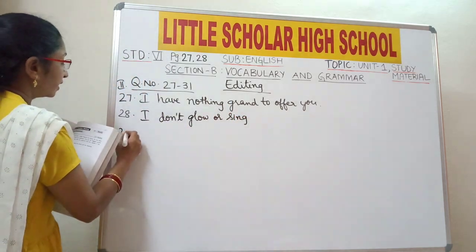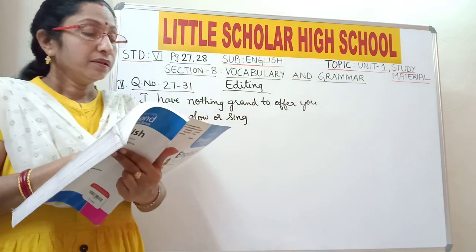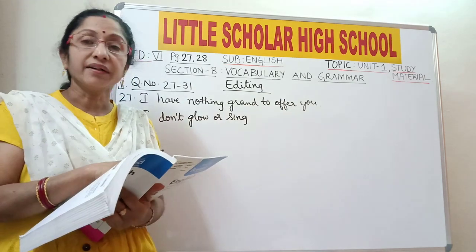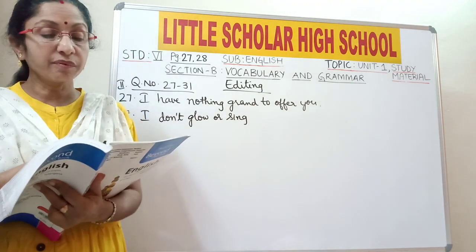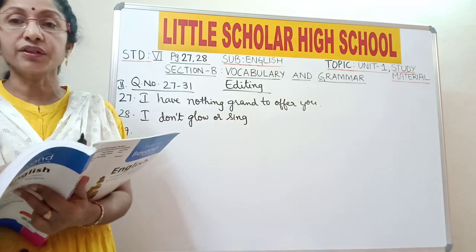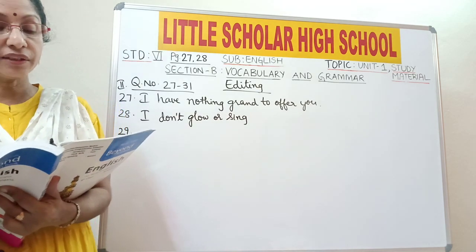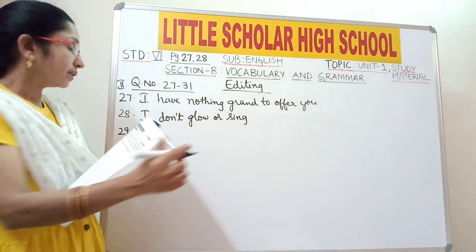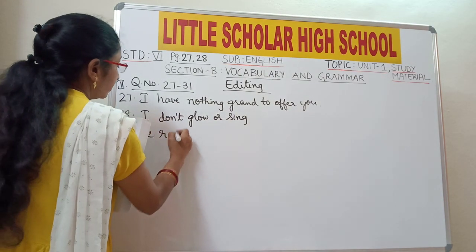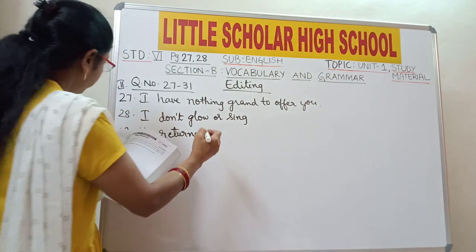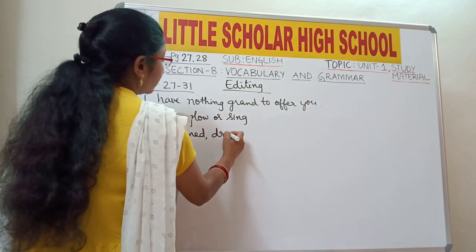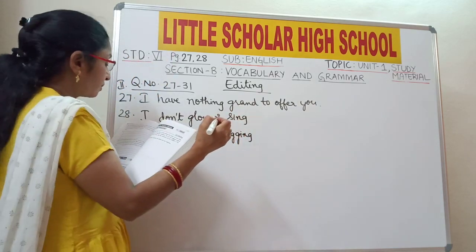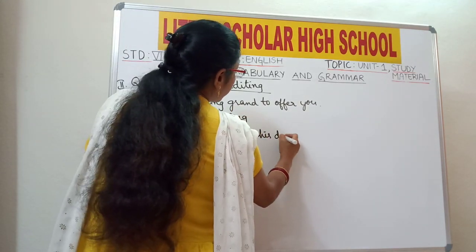Question number 29: 'He returned, drag his dry branches.' The mistake is the word 'drag'. 'Drag' is present tense — it should be replaced with its present participle form 'dragging'. The ing form of drag should be used. Write: 'He returned, dragging his dry branches.' The verb 'drag' is replaced with its present participle 'dragging'.